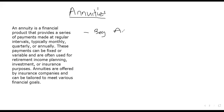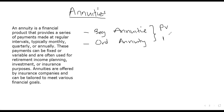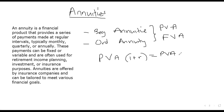If payments are made at the beginning, we call them annuity due. If they're made at the end of a period, it's called an ordinary annuity. For each of these, we have both the present value and the future value of an annuity. For annuities due, we always multiply the values we get times (1 + R). This applies to both the present value annuity due and the future value annuity due.